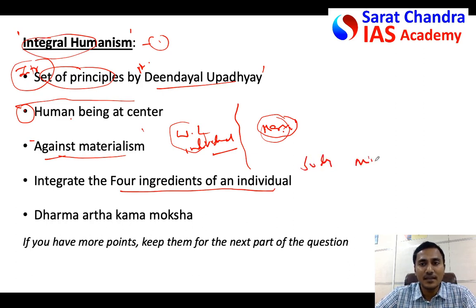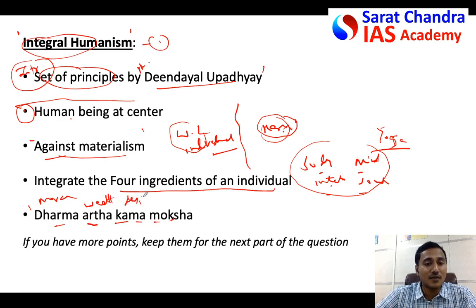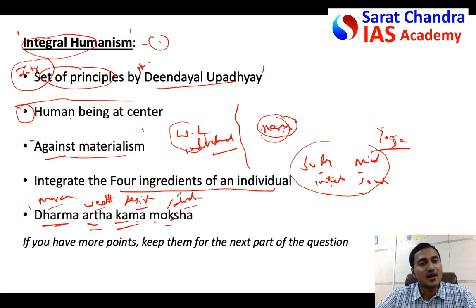Similarly, integral humanism says that the four ingredients of the individual — that is the body, the mind, the intelligence, and the soul — all four shall be integrated in unison. For example, yoga is a practice that tries to integrate the body, mind, intelligence (wisdom), and the soul. It also talks about Dharma, Artha, Kama, and Moksha. Dharma is moral principles, Artha is wealth, Kama is desire, and Moksha is salvation. These should go hand in hand. The industrial revolution and technologies focus only on Artha and Kama, however true progress can happen only when you also focus on Dharma and Moksha.